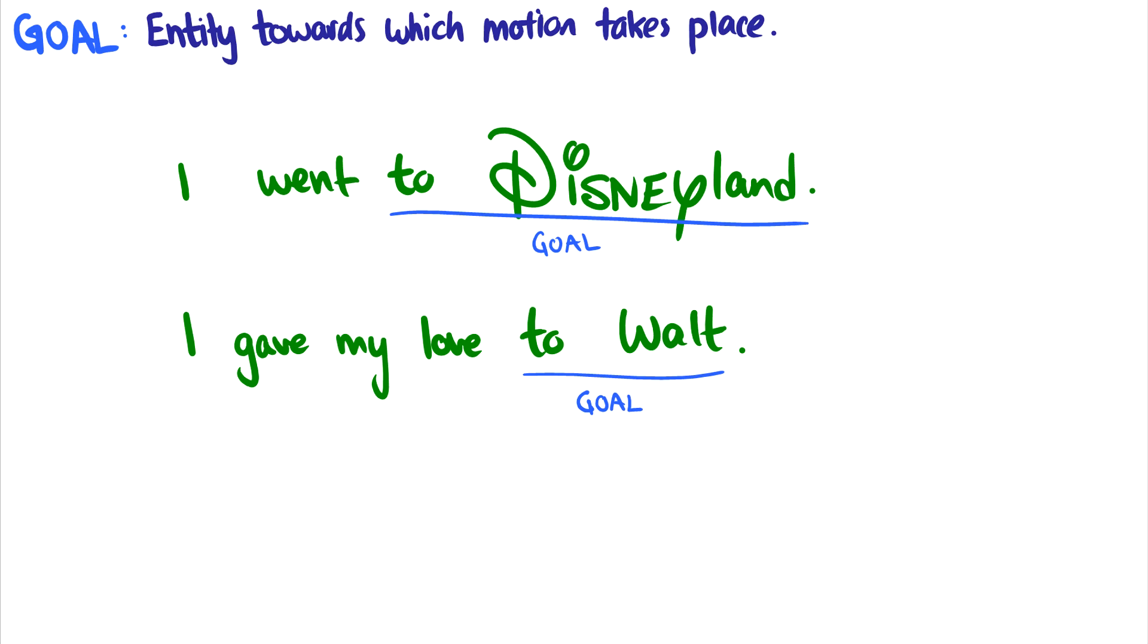This is generally a pretty straightforward one that people don't have problems with. The key here that I note is that this is abstract. So I gave my love. You can't physically give love to somebody. But the abstract goal is to give the love to Walt. While I went to Disneyland, that's a very clear and concrete goal. It exists in real life.